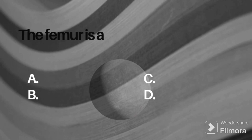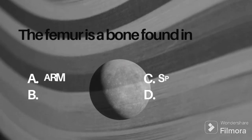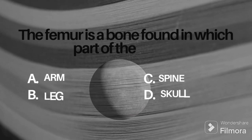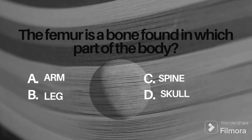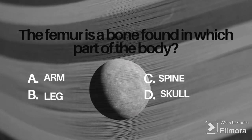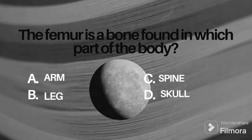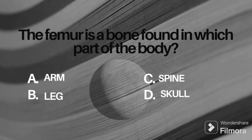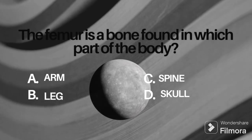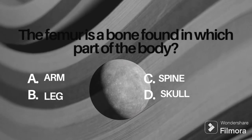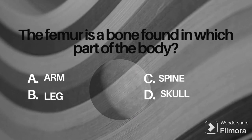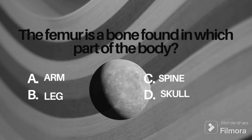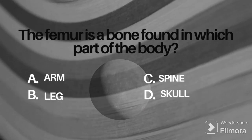The second question is: the femur is a bone found in which part of the body? Option A: arm, B: leg, C: spine, D: skull. Please give your right answer in the comment box.